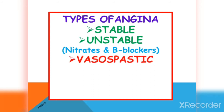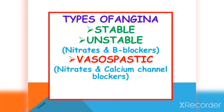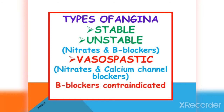We have another type of angina known as vasospastic angina, also called Prinzmetal angina or variant angina. This occurs because of reversible vasospasm of the coronary vessels and can be relieved by the administration of vasodilators like nitrates and calcium channel blockers. The important thing to remember is that beta blockers are contraindicated in vasospastic angina, because by blocking beta-2 receptors, alpha receptors will be left unopposed.